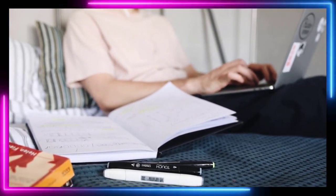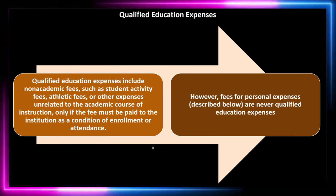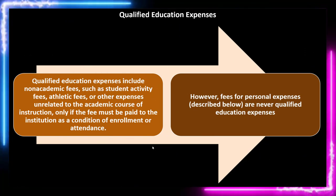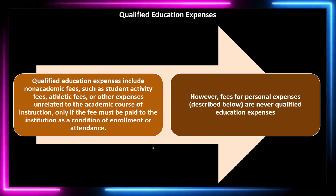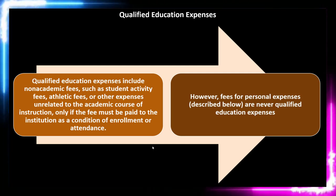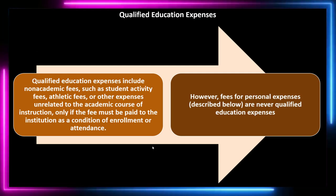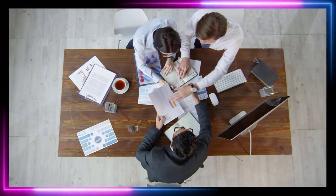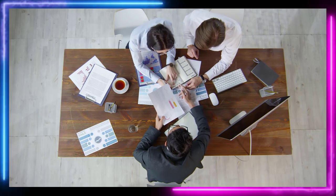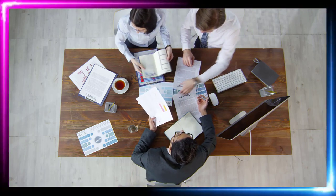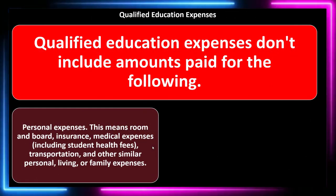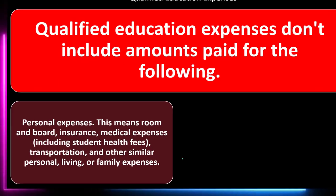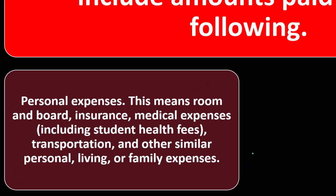The institution should provide documentation — at minimum covering tuition — applied to the proper period. We need to think about other qualifying materials and whether they're included in the institution's documentation. If they're not included, we have to consider whether they can be added, and there may be differences between what qualifies under the American Opportunity Credit versus the Lifetime Learning Credit.